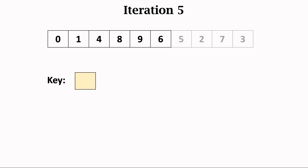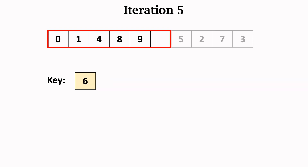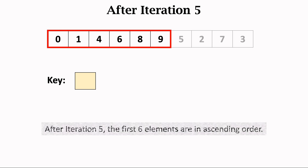Now the fifth iteration begins. We work on the first six elements. Take the rightmost element, 6, out of the subarray and let 6 be the key. We find the right position for inserting the key by comparing with the remaining elements. This is the right position for inserting key 6. Move the elements 8 and 9 one step rightward to make a room, then put the key in the vacant position. After the fifth iteration, all six elements are in ascending order.